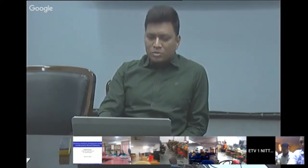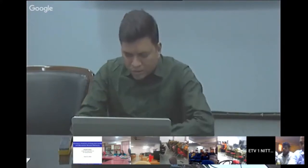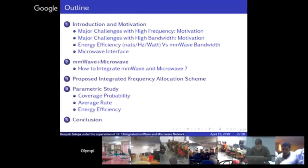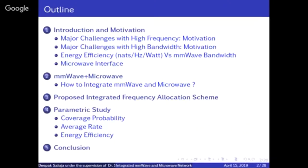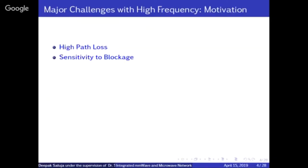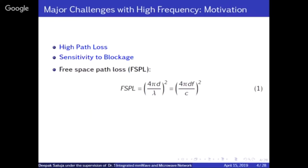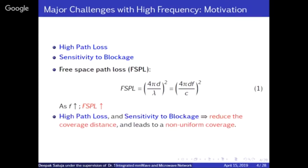In this talk we'll discuss how to mix these two frequency types. First, the major challenges of millimeter wave: high path loss and sensitivity to blockage. Millimeter wave has very high path loss because of the free space path loss formula, FSPL, which states that if frequency is high, free space path loss is high. Second, blockage is very high — millimeter wave cannot even cross a wall, whereas microwave can easily cross a building.